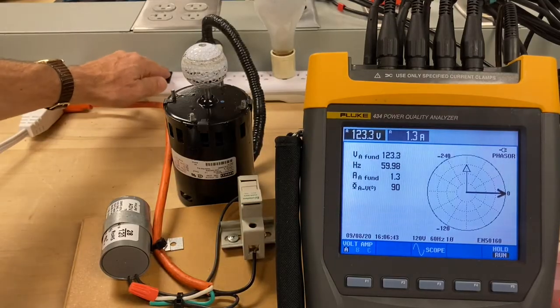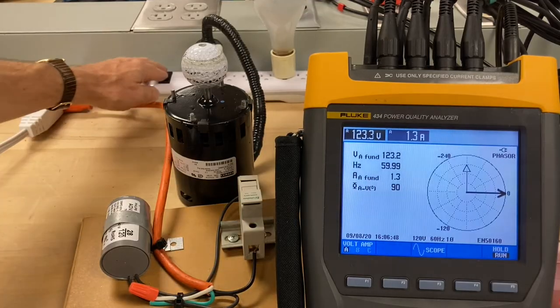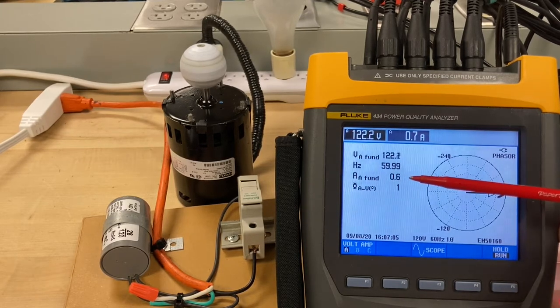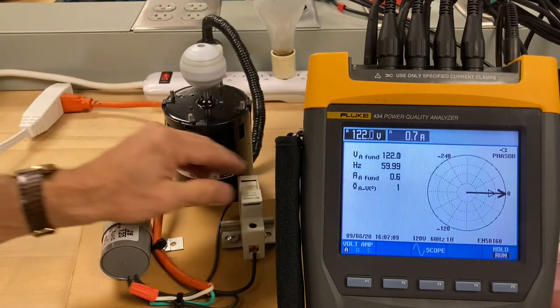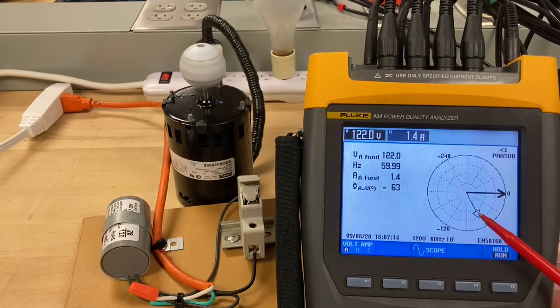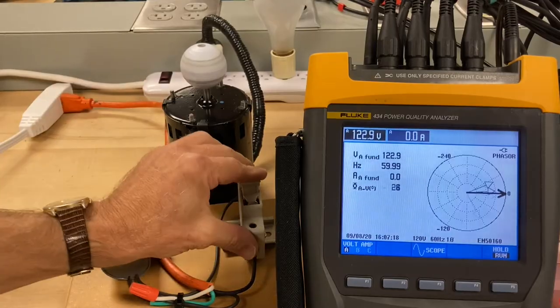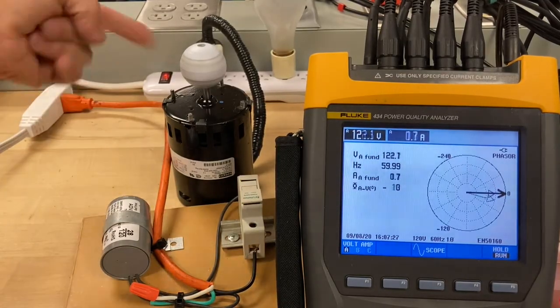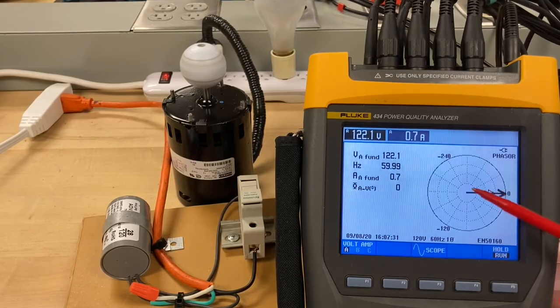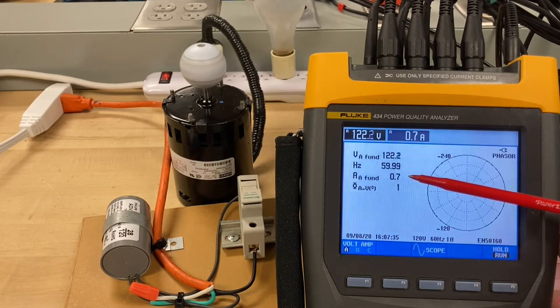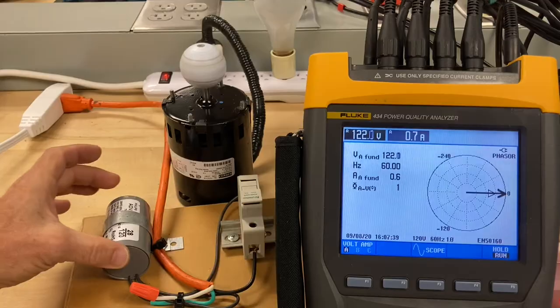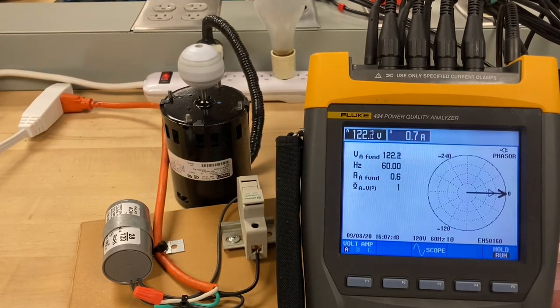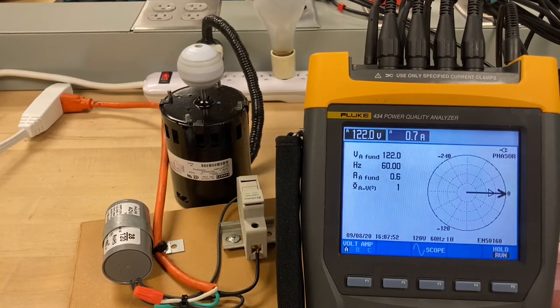So if we put the two together, the one pointing up, the other pointing at an angle down, turn them both on, and they line each other up. And the current goes down. If I just have the motor going, the current's 1.4 and out of phase. If I just have the capacitor, the current is 1.3 amps and out of phase. But when I turn them both on, it goes in phase and the current drops below what either of them is individually. So what we're seeing here is we can actually add a load and reduce the overall current.